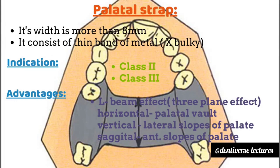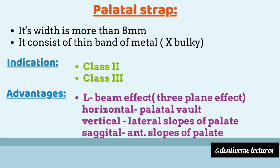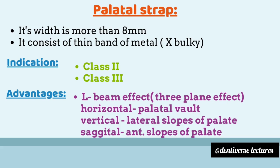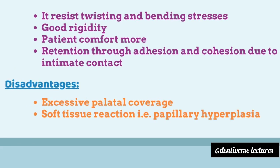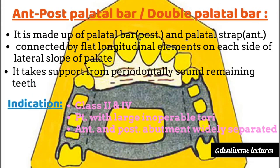Second is the palatal strap — remember the width is always more than 8 millimeters. It consists of a thin band of metal which makes it less bulky. Indications are class 2 and class 3. Advantages include a strong L-beam effect, also called the three-plane effect: horizontally provided by the palatal vault, vertically by the lateral slopes of the palate, and sagittally by the anterior slopes of the palate. It resists twisting and bending stresses, provides good rigidity, enhances patient comfort due to lesser bulk, and provides retention through adhesion and cohesion due to intimate contact. Disadvantages are excessive palatal coverage and soft tissue reaction due to covering a wider surface area, leading to papillary hyperplasia.